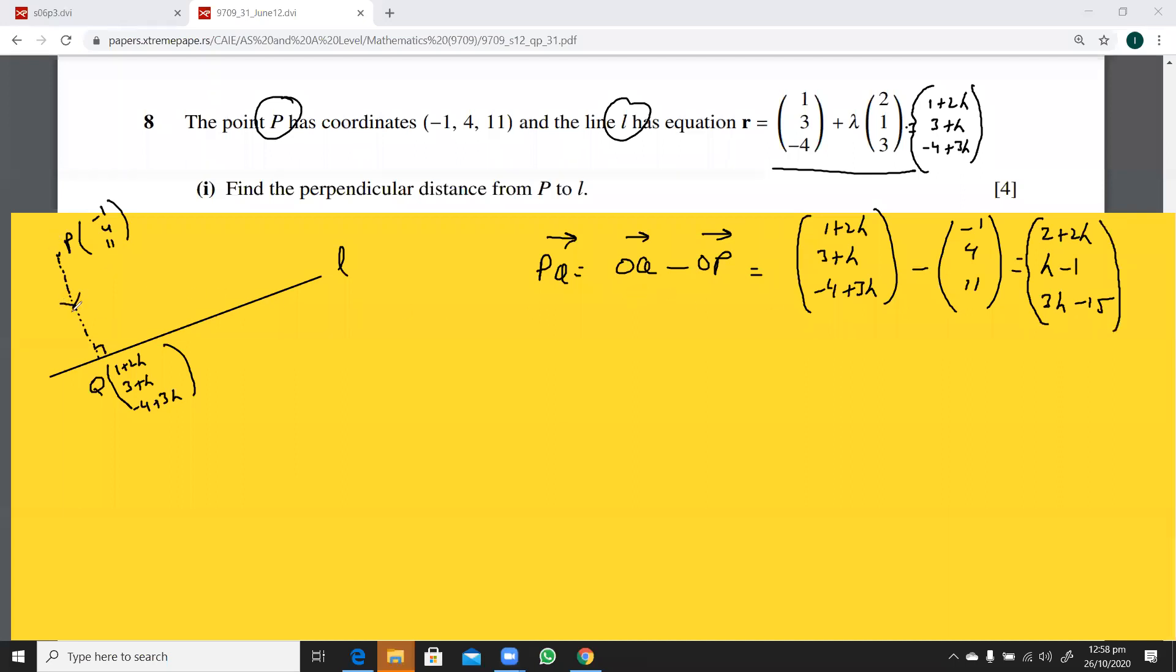Now, you see this PQ direction is perpendicular to this line L. So using this fact, we will be performing this PQ dot this direction vector of the line L, which is 2, 1, 3, and we'll put that equal to 0. So this is going to be 2 into 2 plus 2 lambda, that is 4 plus 4 lambda plus lambda minus 1 plus 9 lambda minus 45, that is equal to 0. 4 lambda, 5 lambda, 14 lambda.